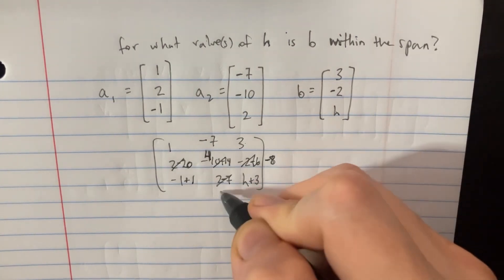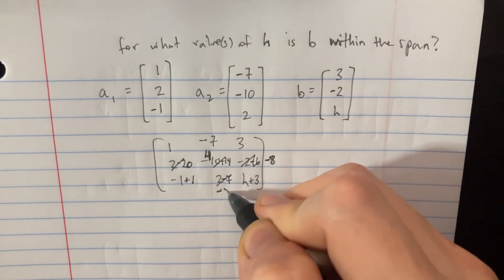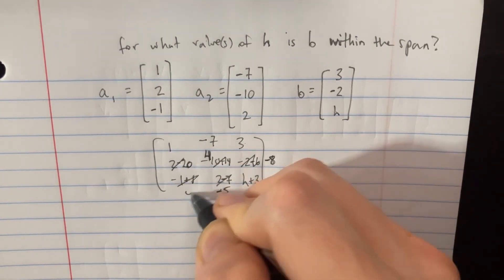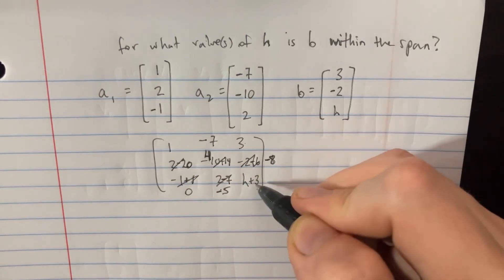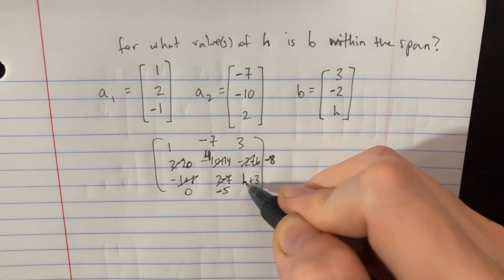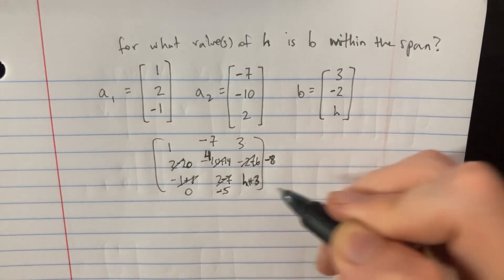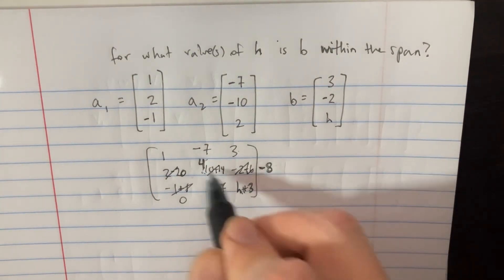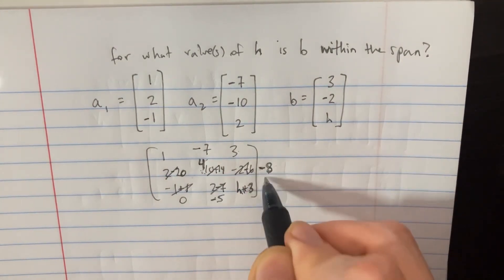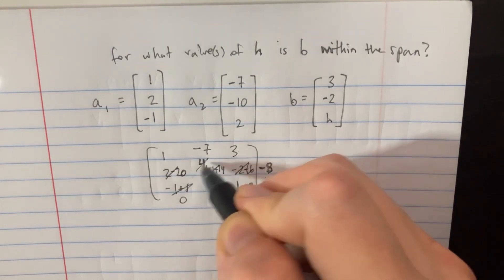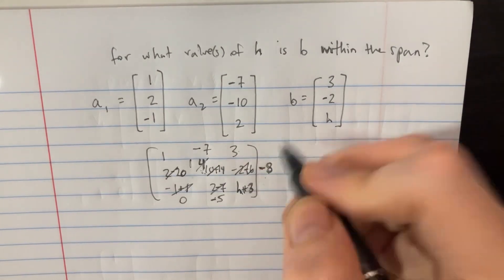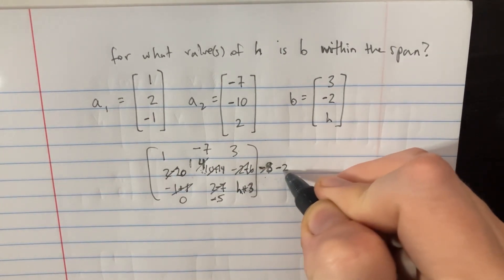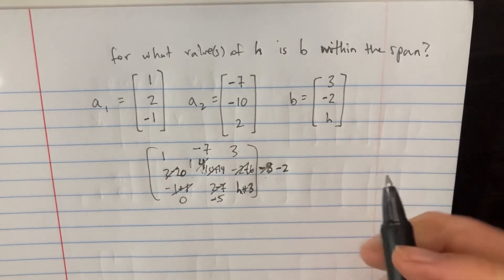This gives us a negative 5. This is our 0, and now here we have h plus 3. Let's divide this row by 4 so that we get a 1 here and a negative 2 right here.